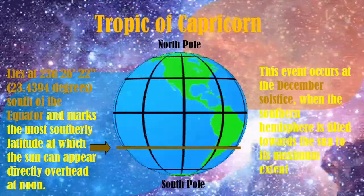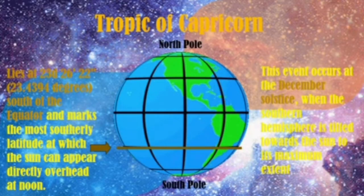The Tropic of Capricorn lies at 23 degrees 26 minutes south of the equator and marks the most southerly latitude at which the sun can appear directly overhead at noon. This is also the circle of latitude that contains the subsolar point at the December solstice. This event occurs at the December solstice when the southern hemisphere is tilted toward the sun to its maximum extent. The Tropic of Capricorn is the southernmost latitude where the sun can be seen directly overhead, reaching 90 degrees below the horizon at solar midnight on the June solstice.